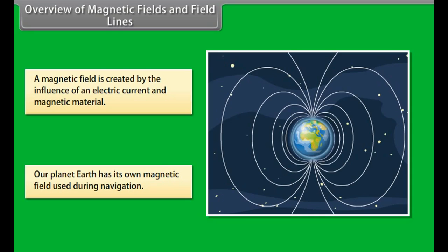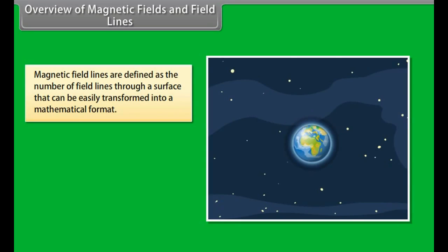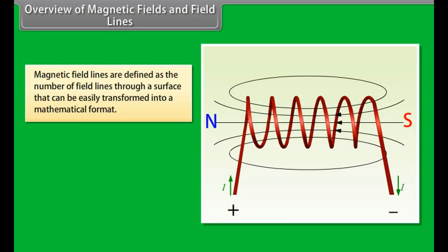Magnetic field lines help in stating simple concepts of magnetism easily. These are defined as the number of field lines through a surface. These can be easily transformed into a mathematical format.